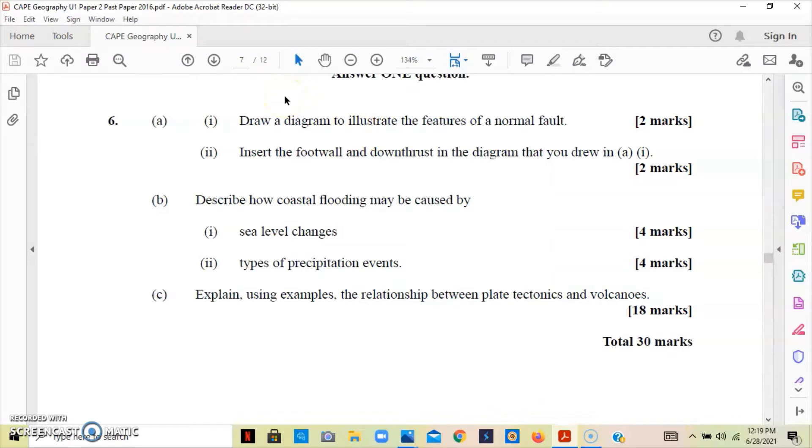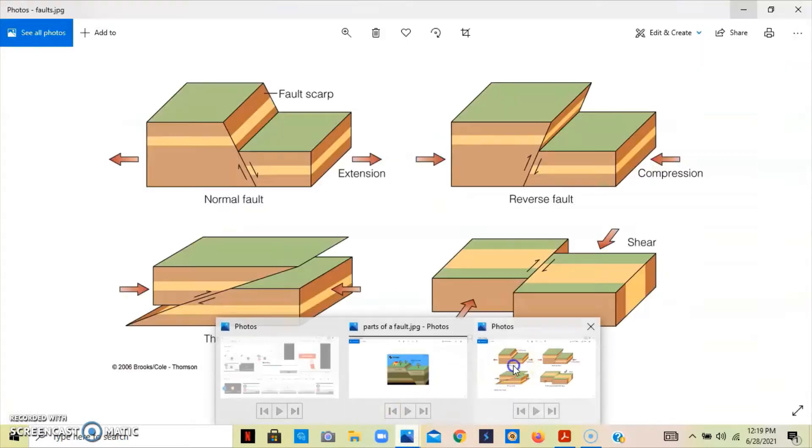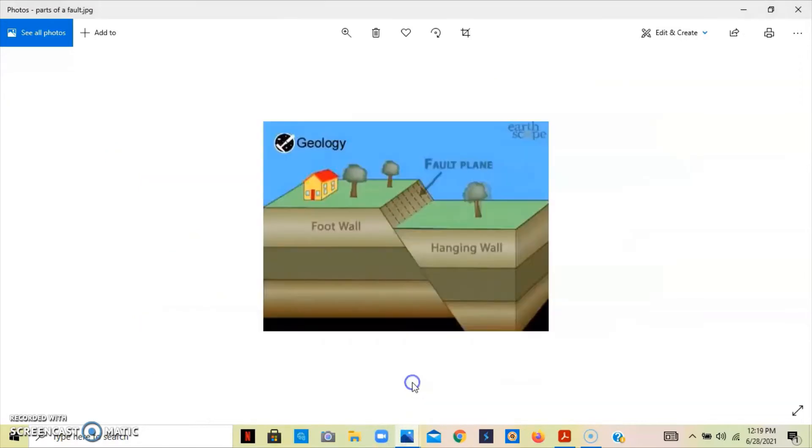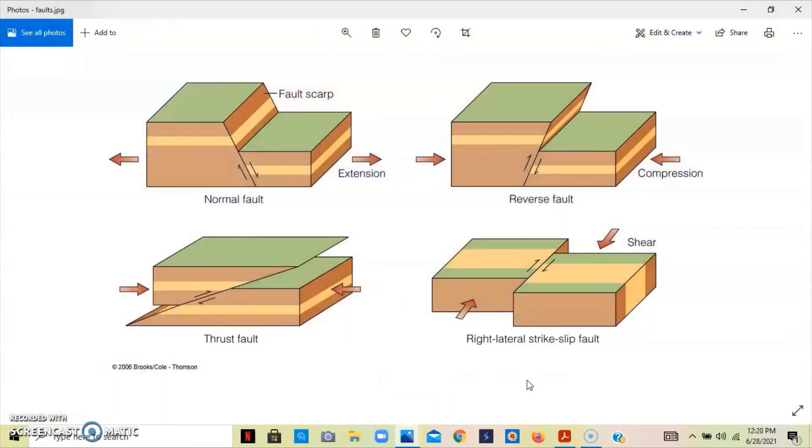Part two asks us to insert the foot wall and the down thrust in the diagram that you have drawn. The foot wall is the bottom part of the rock below the fault plane. The down thrust is when the hanging wall moves down and under the foot wall. Once you're able to draw a diagram like this and label it, you should get the two marks.